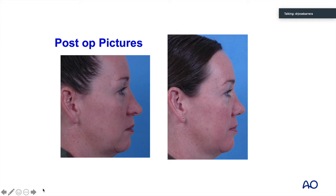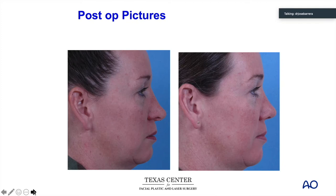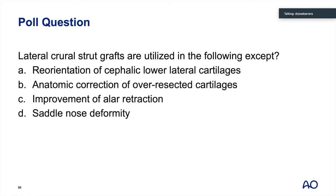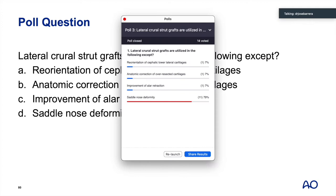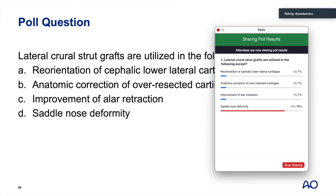Poll question on lateral crural strut graft utility. Lateral crural strut grafts have quite a bit of utility in most revision cases, but where you have over-resection of the nasal dorsum — like a saddle nose deformity — a lateral crural strut graft by itself will not help. Other techniques like spreader grafting and overlay grafts are needed for saddle nose deformity.